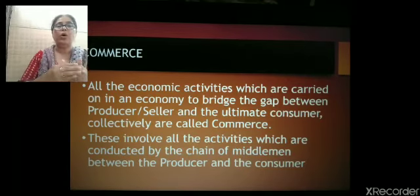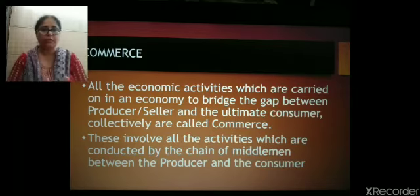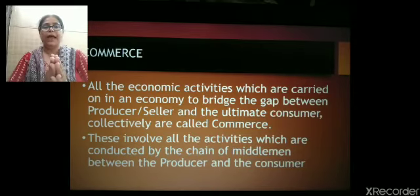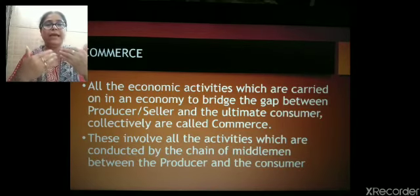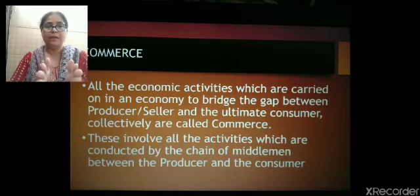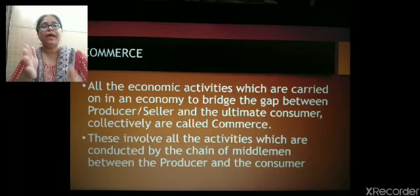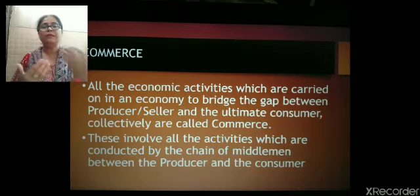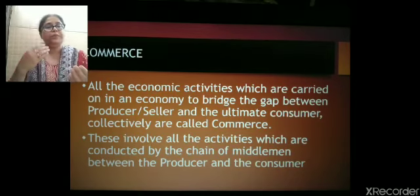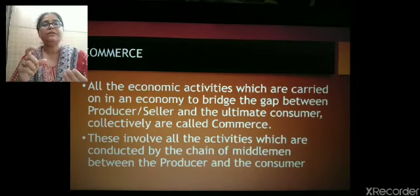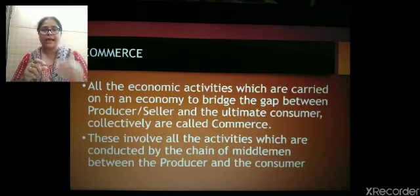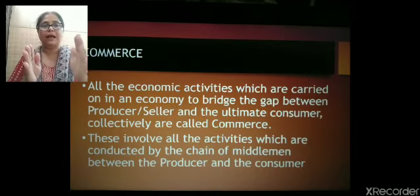So the meaning says that all the economic activities which are carried on in an economy to bridge the gap between the producer or seller and the ultimate consumer are called commerce. The persons who are performing these activities are known as middlemen. Middlemen are the people who act as a link between the producer and the consumer, because the main focus of the producer is only production and the main work of the consumer is only consumption. The work of selling goods to the consumer is not a part of the producer's job, so this job is performed by the middlemen.